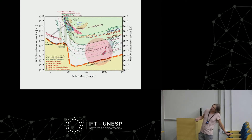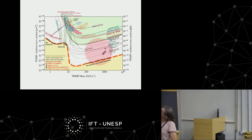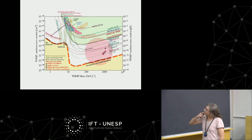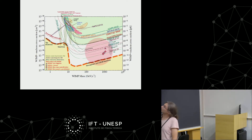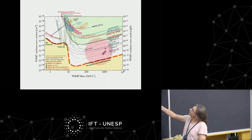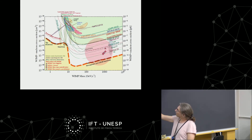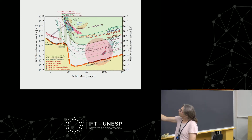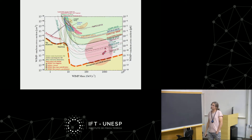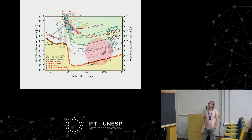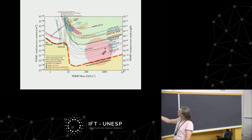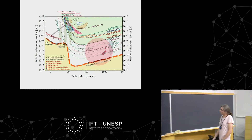There is a bright future for direct detection experiments. The progress has been logarithmic: in 2012 the limits were around 10^-40 cm²; now we are at 10^-46 cm². In the next few years there will be further increases in sensitivity by one or two orders of magnitude. It is possible — not guaranteed — that in the next three, four, or five years we will see signals from dark matter-induced nuclear recoils, but one has to be lucky.